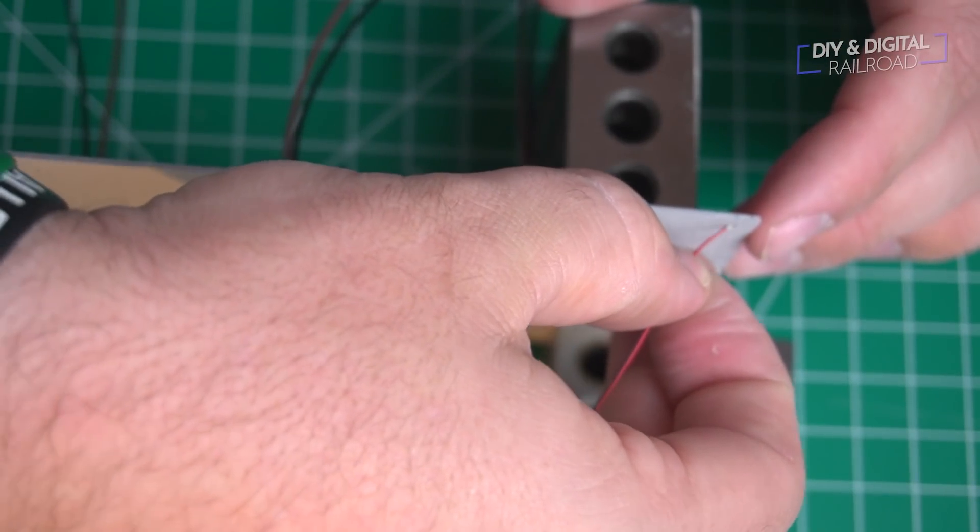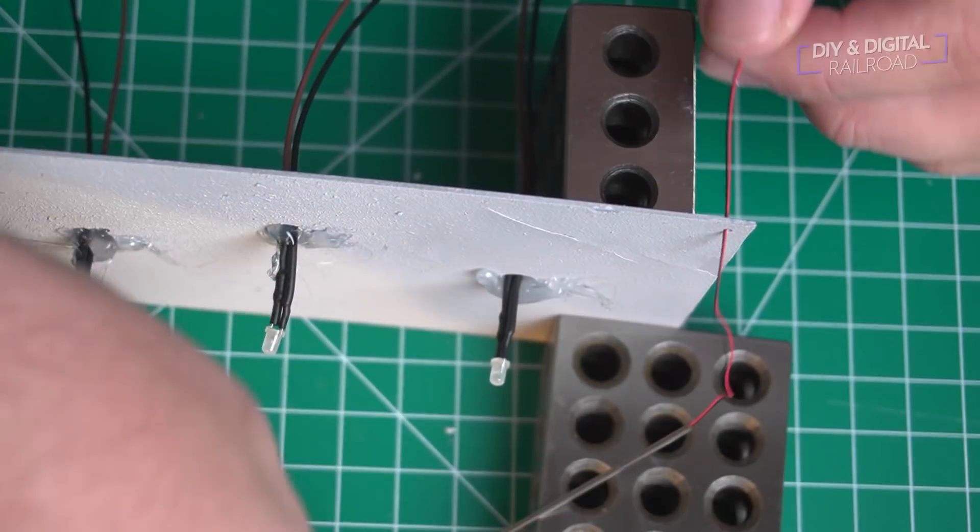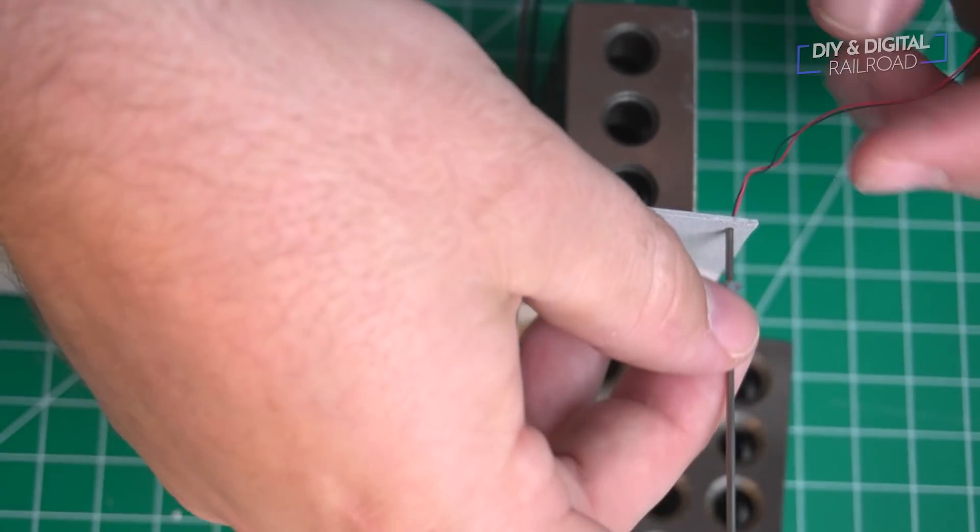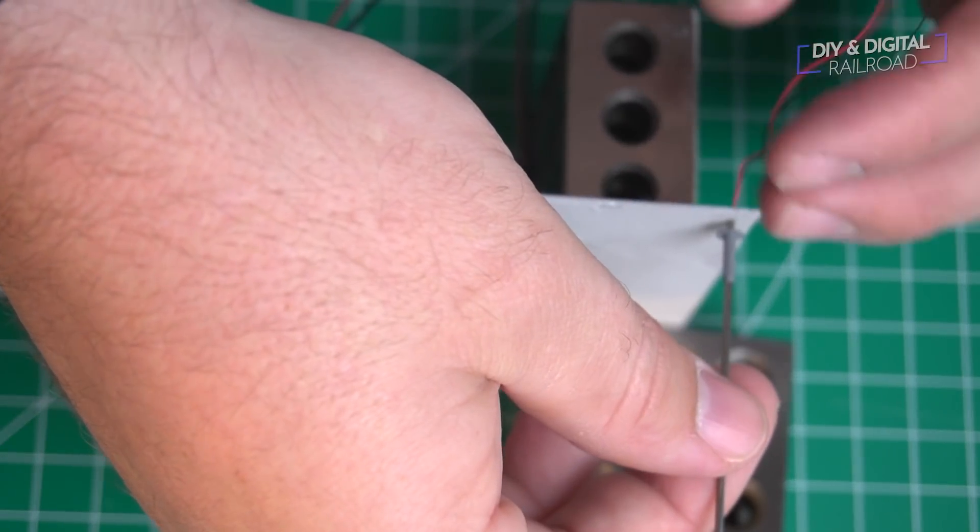Next I threaded the wires for the street lamp, which are extremely tiny, through that hole that I had just punched. And once it was in place, I hit it with a little bit of hot glue to secure it down.